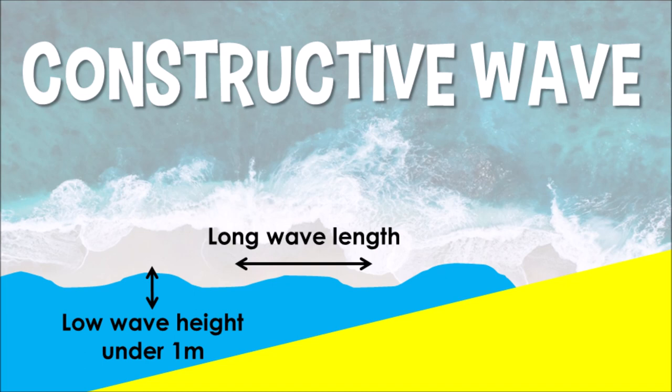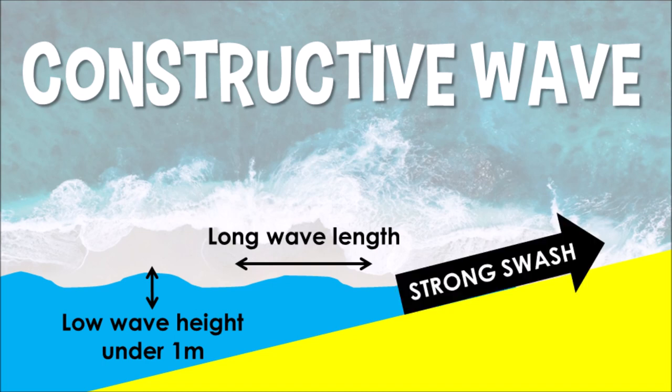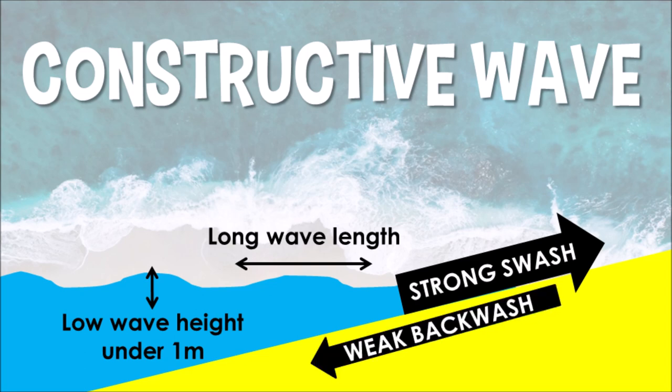But they have a really long wavelength. Now when constructive waves approach the coastline and wash up onto the shore, they have so much energy — we call this swash. This means that they can push lots of sediment, sand, pebbles, and rocks onto the beaches or onto the coastline. But when the constructive wave then washes back into the sea or ocean, it's lost all its energy, so it has what we call a really weak backwash.